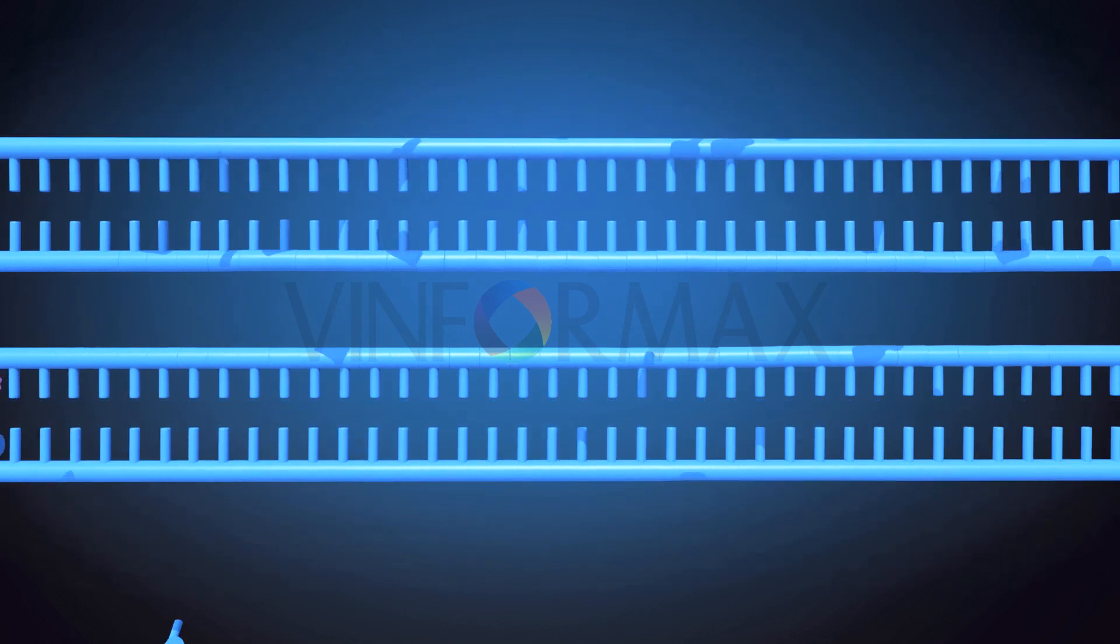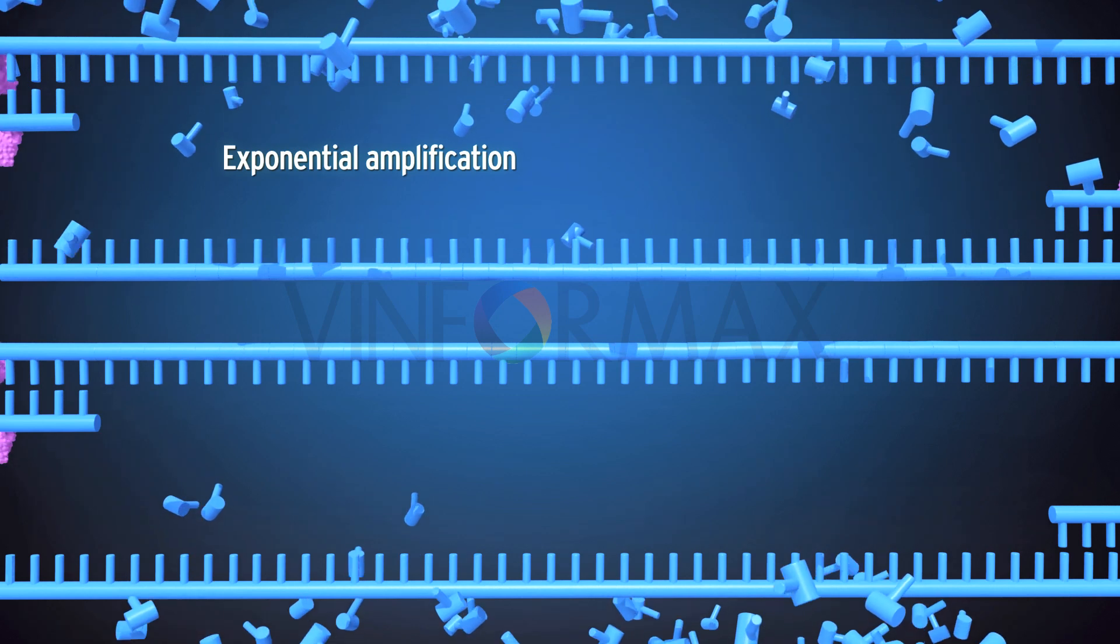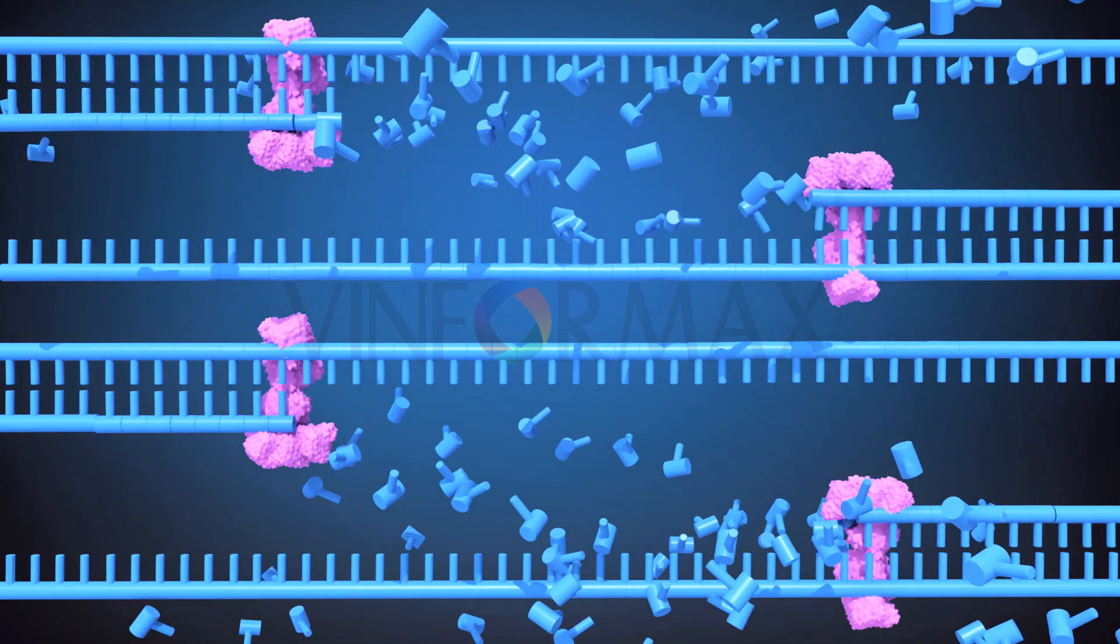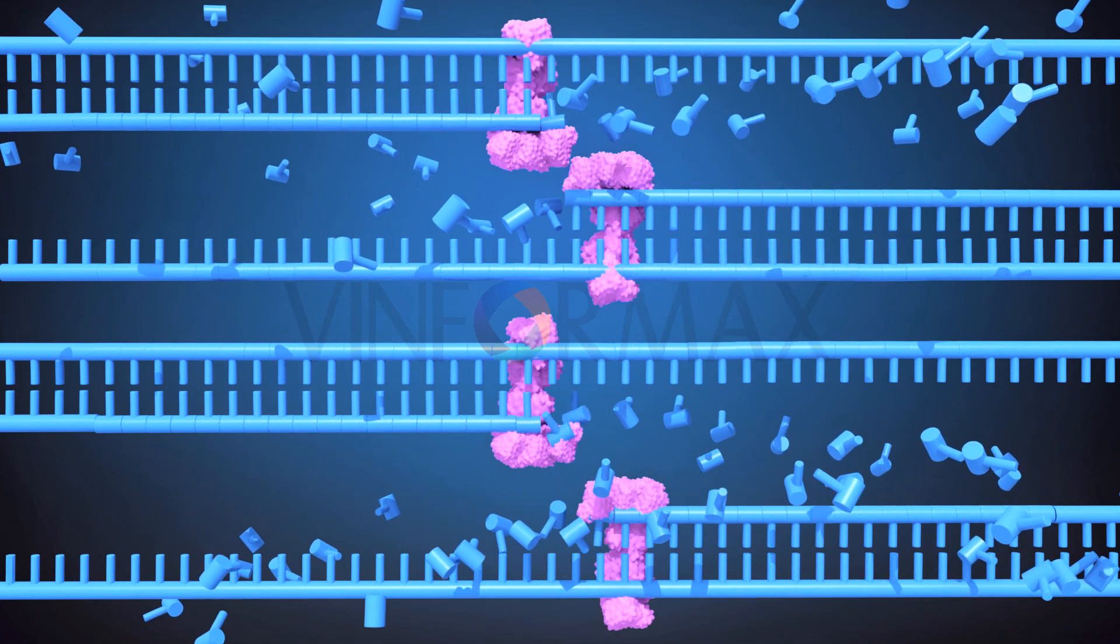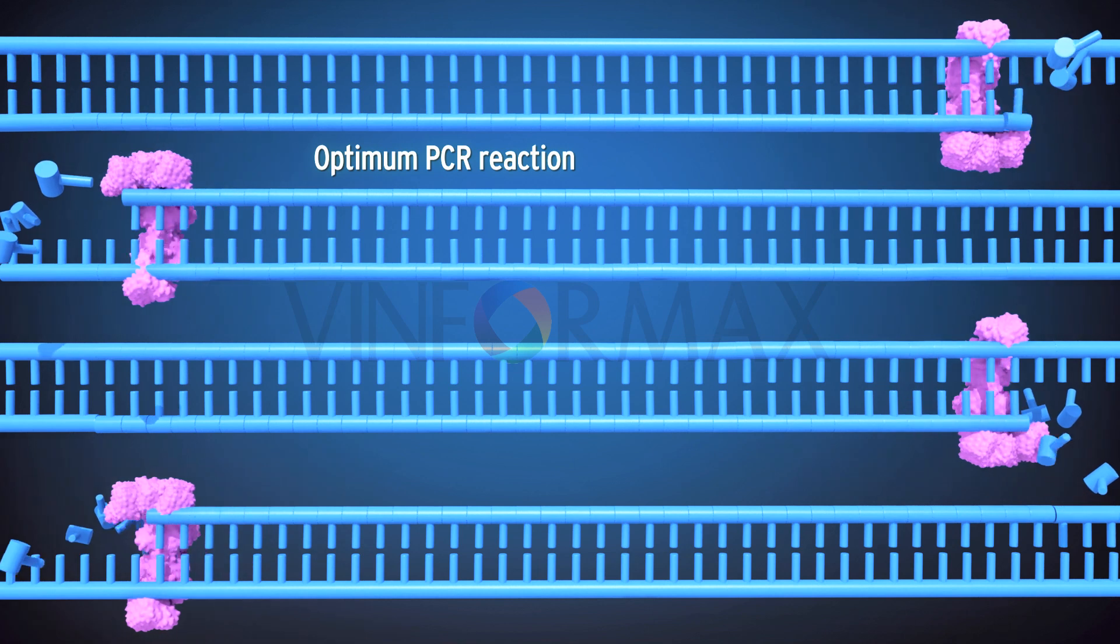This way, an exponential amplification of the DNA is observed with each cycle. An optimum PCR reaction is around 30 cycles.